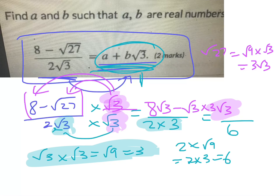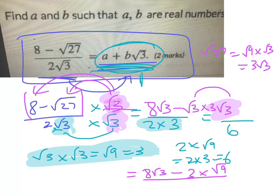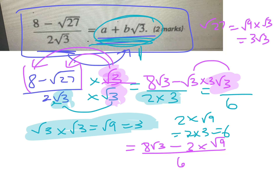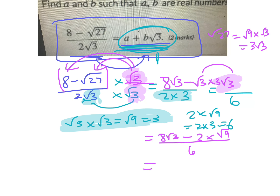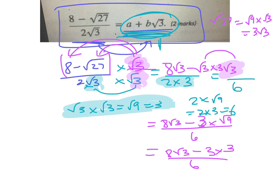Let's simplify that a bit more. On top you have eight root three, and root three times three root three: root three times root three becomes root nine, which is three, so that term is three times three which is nine. So the numerator is eight root three minus nine, and the full expression is (8√3 − 9) over 6.